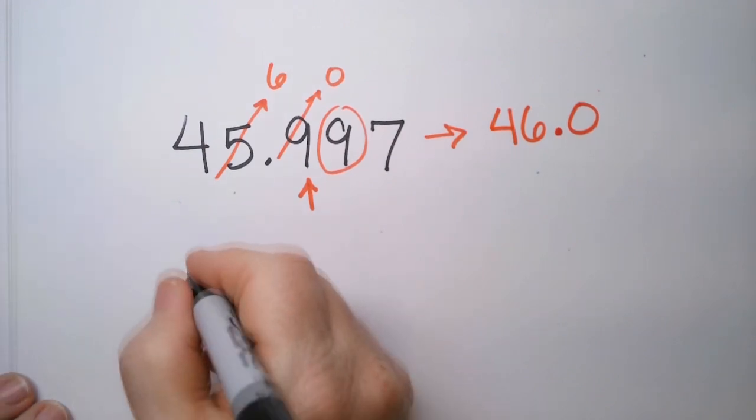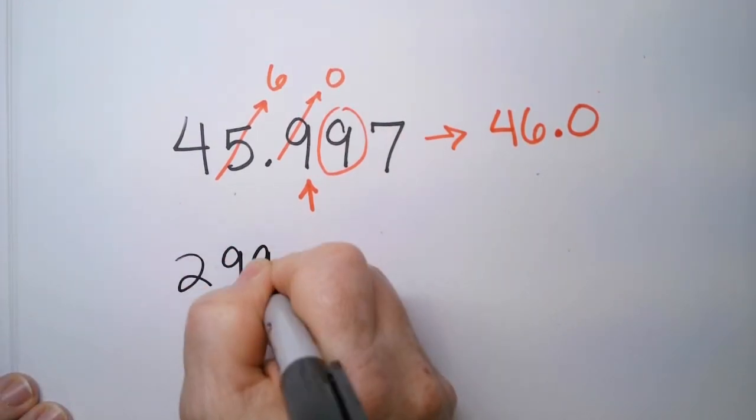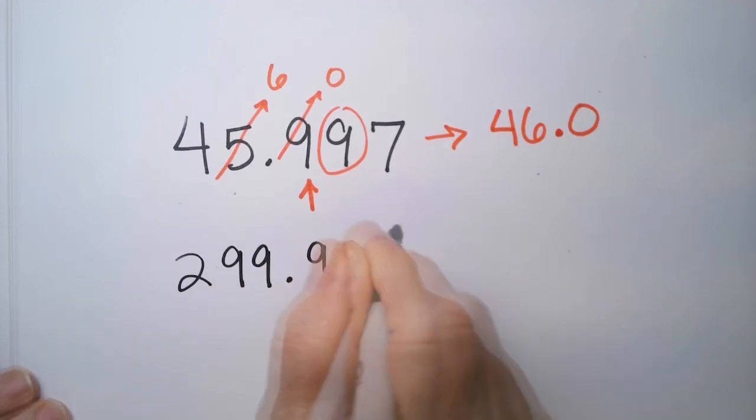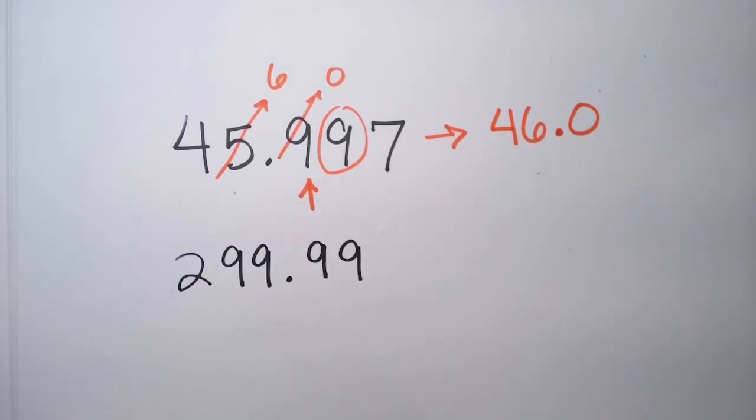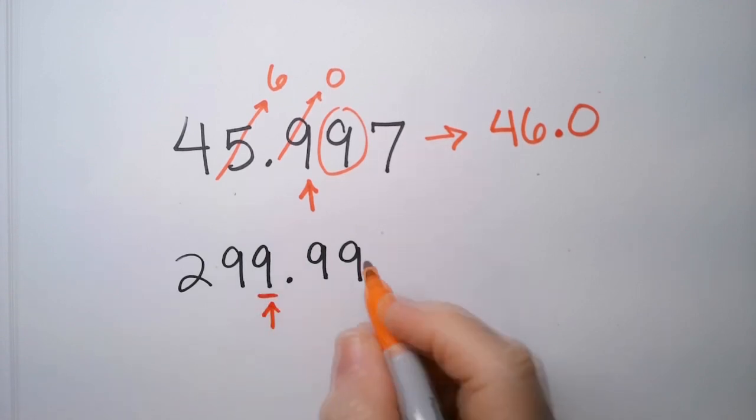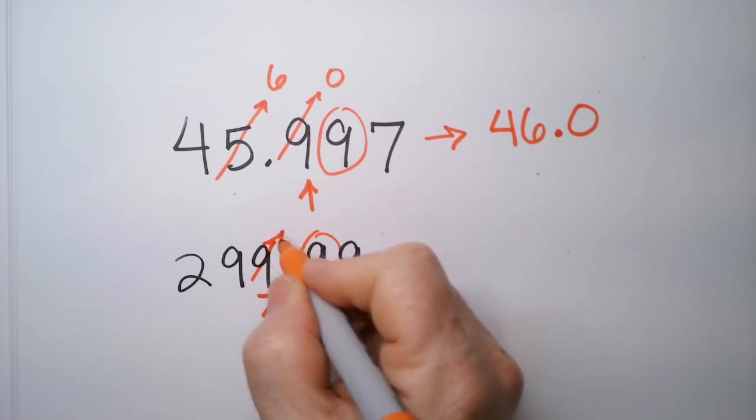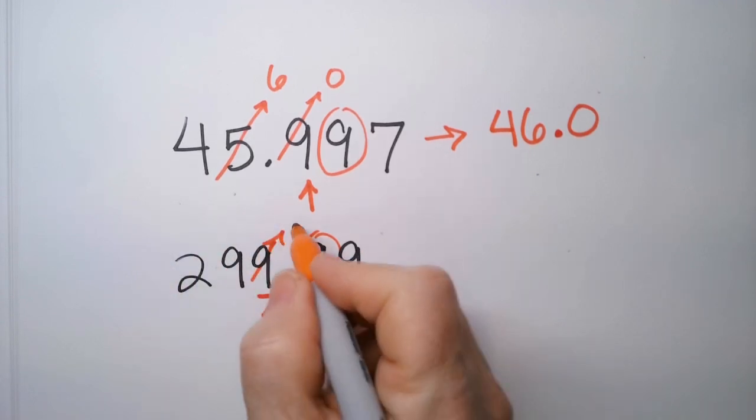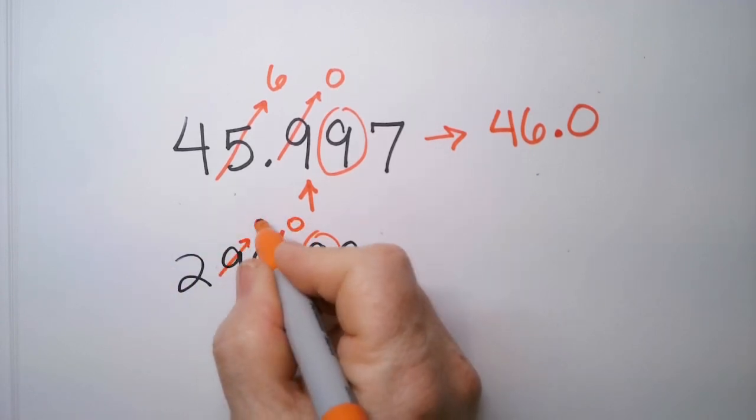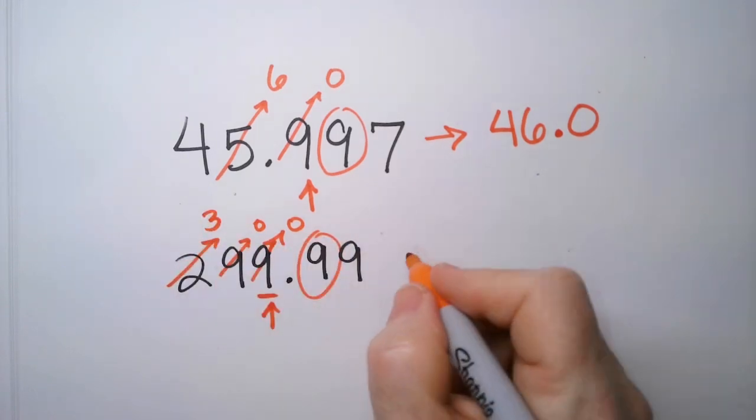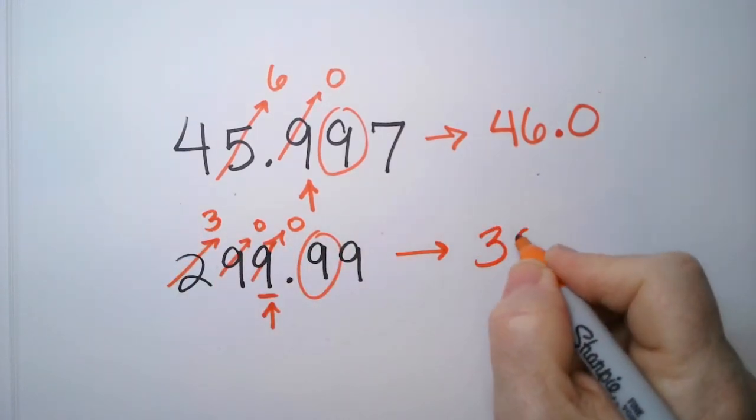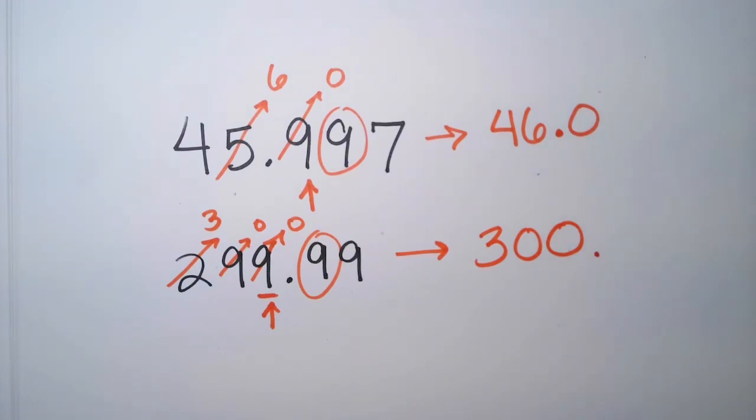And the same for something like this. $299.99. Let's round that up to the nearest whole number. Whole number is right there. So we peak here, and we see that's 5 and above. So this is going to round up, and the whole thing's going to round up, right? Because that's a 0, and then that's a 0, and then this has to round up. So this rounds up to the nearest whole number as 300.